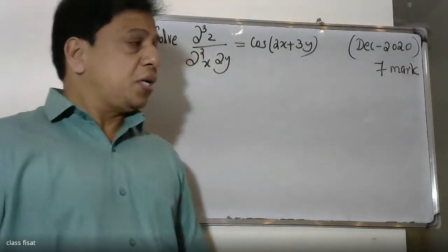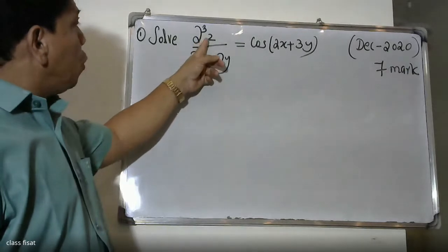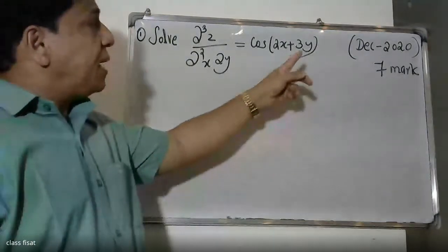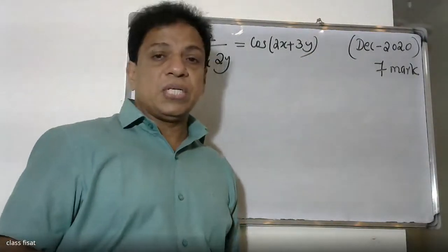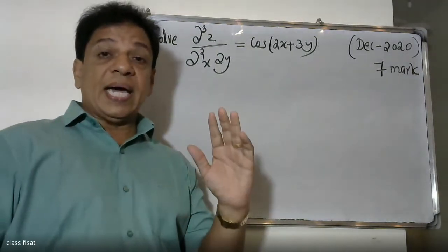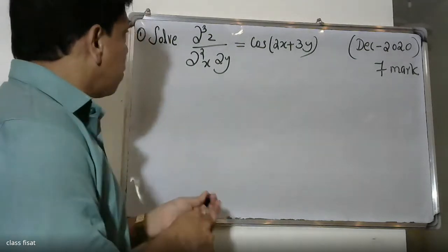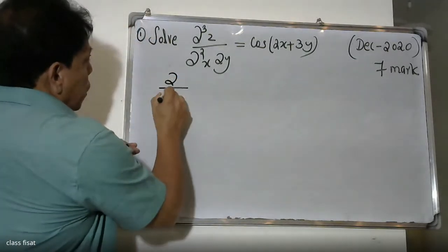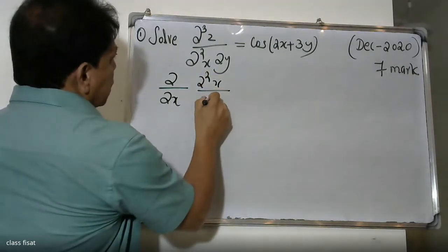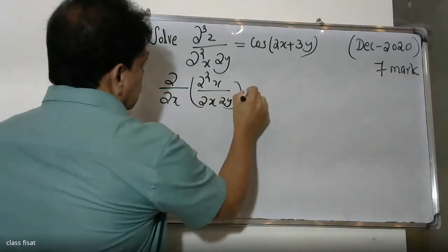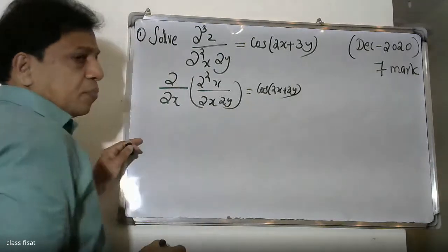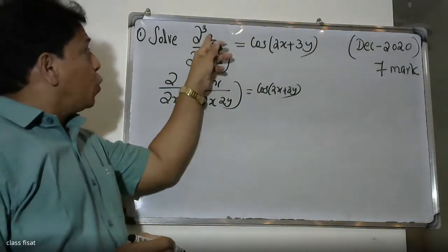Good morning students. The question is: d²z/dx dy is equal to cos(2x + 3y). We need to find z by integrating. So dou square z by dou x into dou y is equal to cos(2x + 3y).